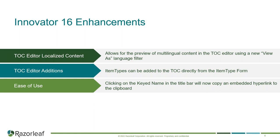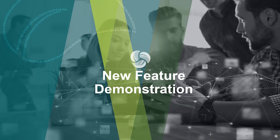There was a lack of familiarity in terms of configuration. People were looking for adding item types where they always did, and now they're adding it back through a more menu button. Also, clicking on the key name in the title bar will now copy an embedded hyperlink to the clipboard, just to make it easier if you want to point to a specific part in your database. You can copy the hyperlink and send it to another user within your database to share it quickly. Without further ado, we can hop over into Eris to show a few of these things.